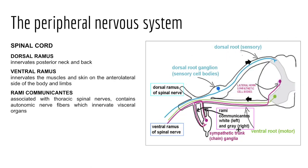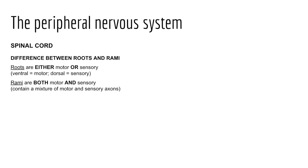To summarize: roots are either motor or sensory—the ventral root is motor, the dorsal root is sensory. But when we look at rami, they are both motor and sensory, carrying signals from and to various areas of the body.